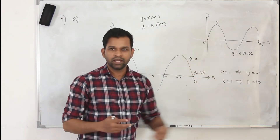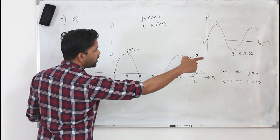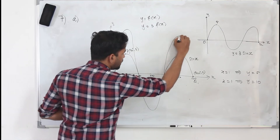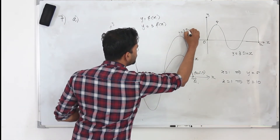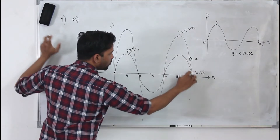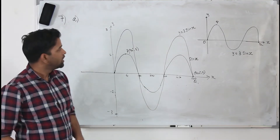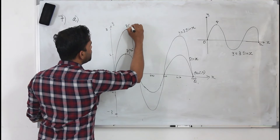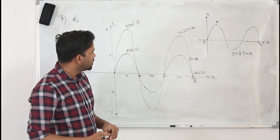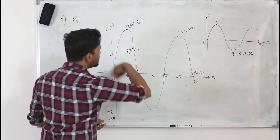Now, if we apply the transformation 3 sine x, the x-intercept will remain the same. The maximum point on sine x is 1, so when you apply 3 sine x, 3 times 1 becomes 3. So the new maximum point is at y = 3. The minimum point will be at minus 3. This will be your y equals 3 sine x curve.